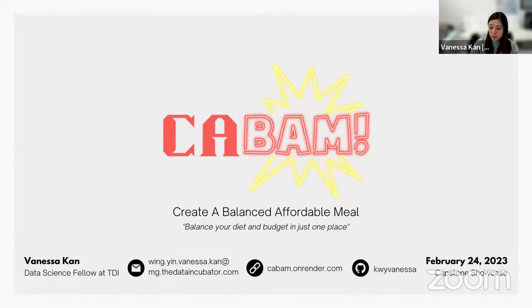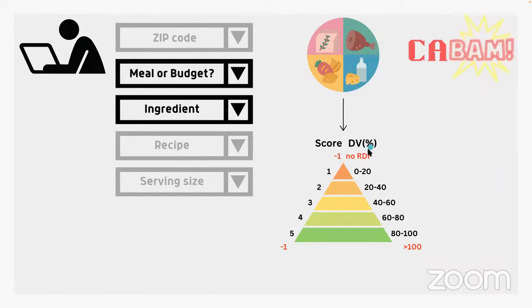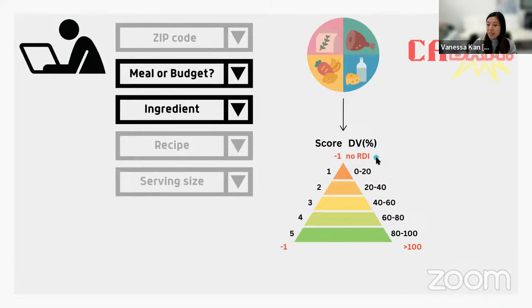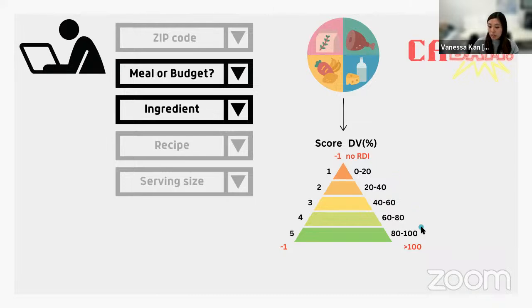I use the nutrition score pyramid, which is based on the recommended daily intake of each nutrient. From each recipe, it contains a nutrition label where all this information is provided. I normalize it to just one serving, and based on that value, I calculate the score. For example, saturated fats — if it does not have a recommended daily intake, it automatically gets a negative score. And if it's carbohydrates or protein within a normal range not exceeding 100%, then it gets a score depending on the amount available in the recipe.